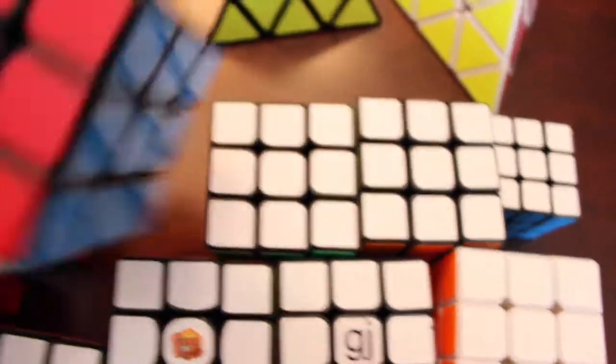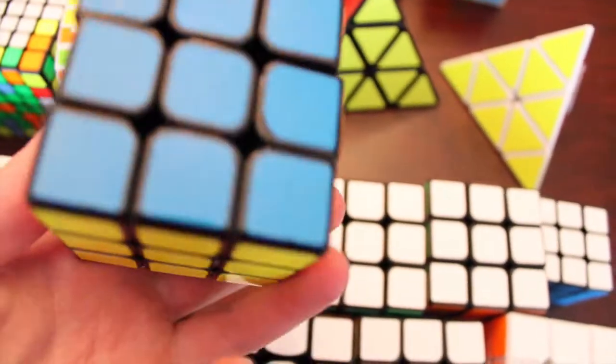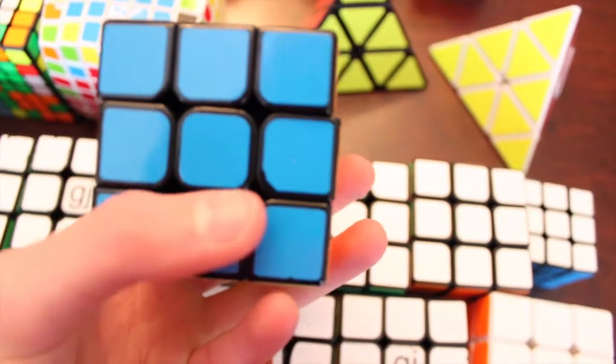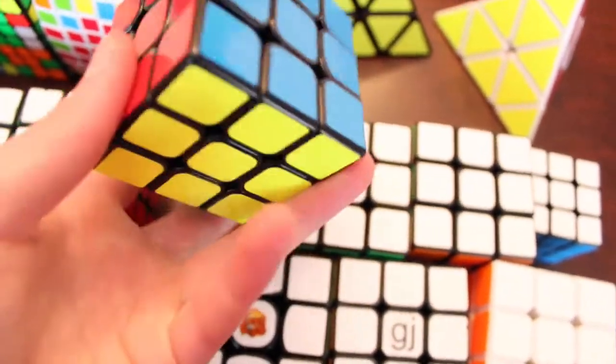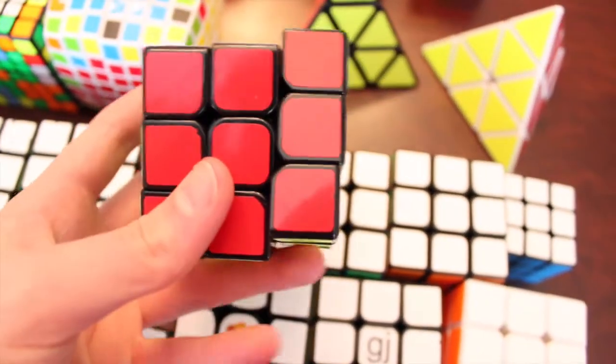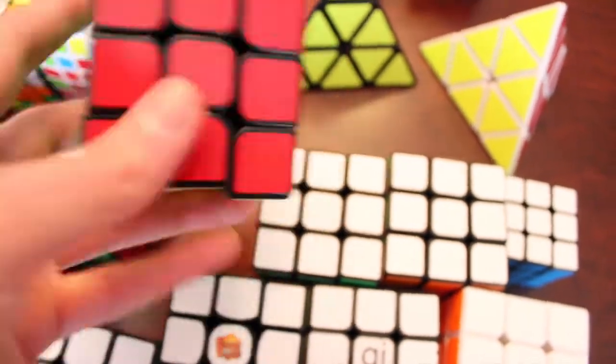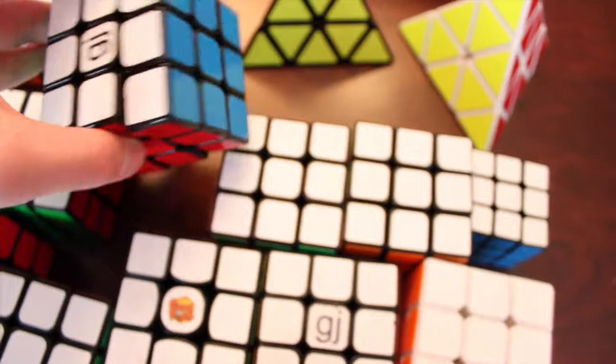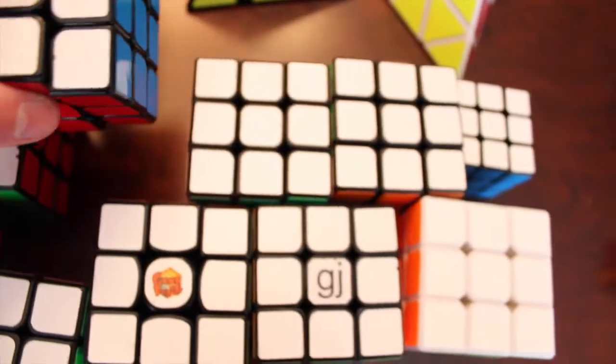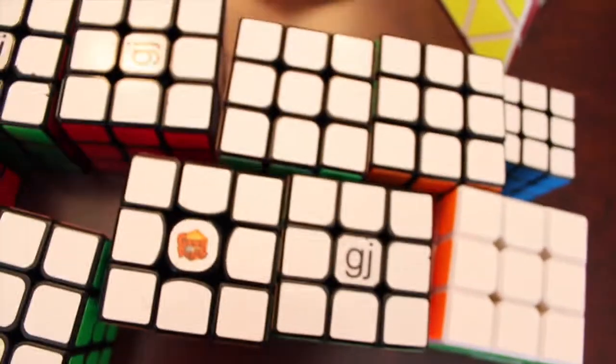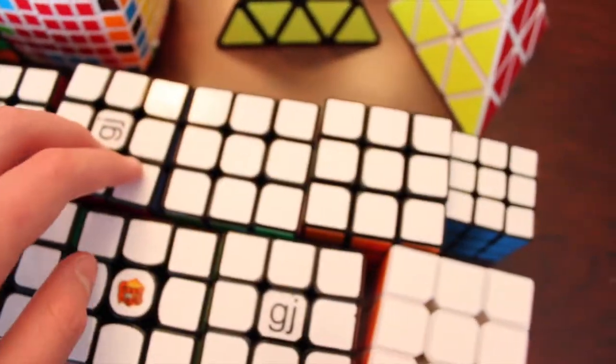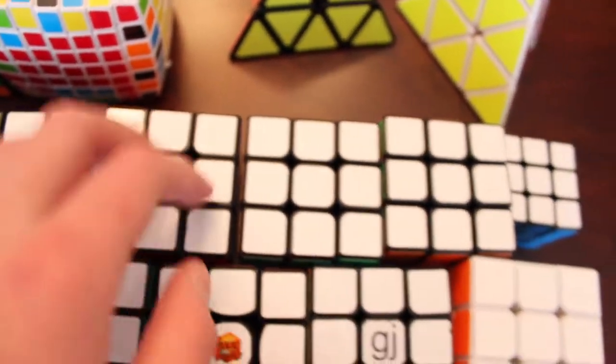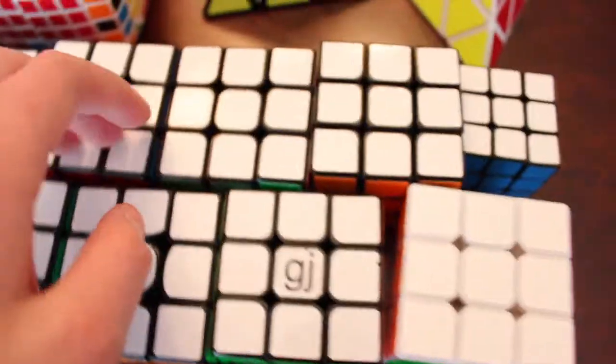And then we have an Aulong V2. These stickers are actually holding up pretty well. Because I actually don't use it a lot. This was going to be my main. But, I actually got like a 13 second average on it and I was like, ooh, that's so good for me. But, after that I didn't get any good times. So, I guess it was just lucky. So, Aulong V2. I don't really like it that much.